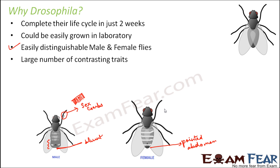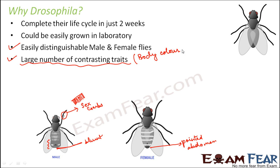Drosophila also has a large number of contrasting traits, which is always desirable when experimenting on genetics, because you want to cross different contrasting traits and observe the output. For example, some Drosophila have red eyes while others have white eyes. In terms of wing shape, some have vestigial wings while others have normal wings. Regarding body color, some are yellow while others are brown. So body color, eye color, and wing shape are examples of contrasting traits in Drosophila.